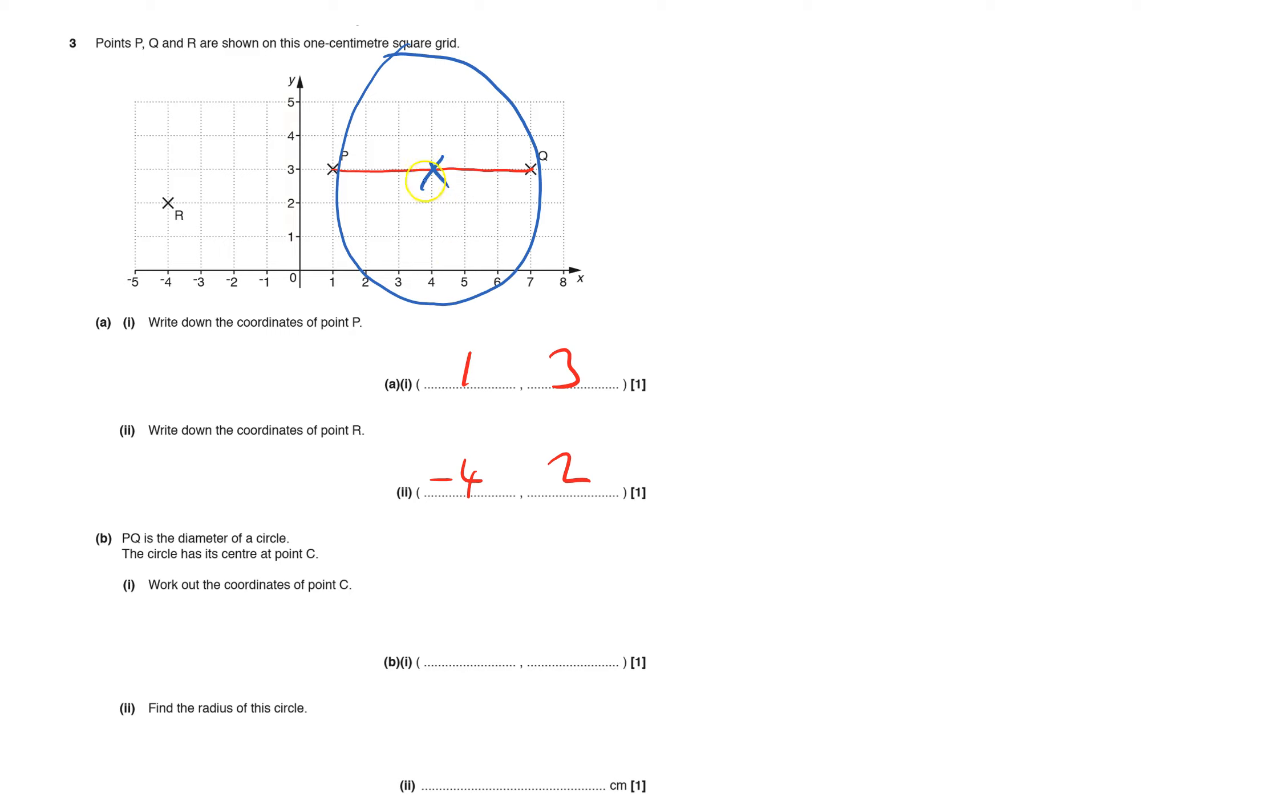Work out the coordinates of point C, well it's four, three. And the radius of the circle, how long is the radius? It's that bit there, and that's three. Well it would be because the whole diameter is six, so it's only half the diameter, so that's three.